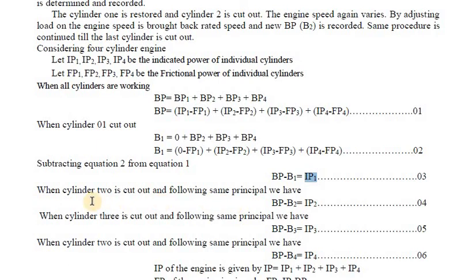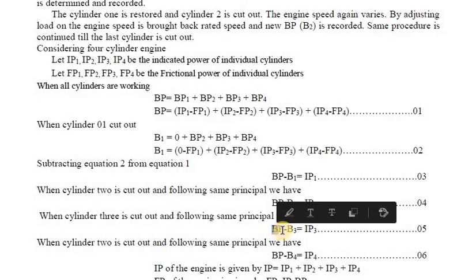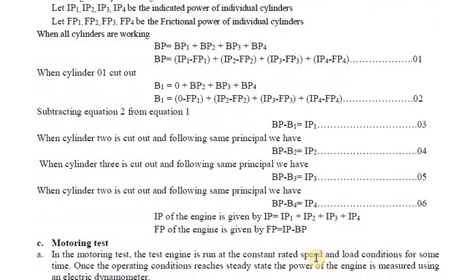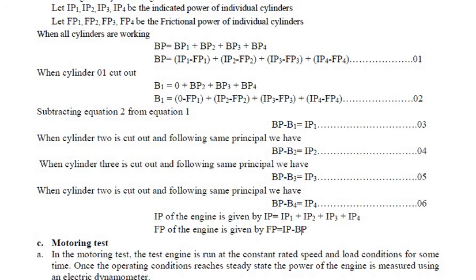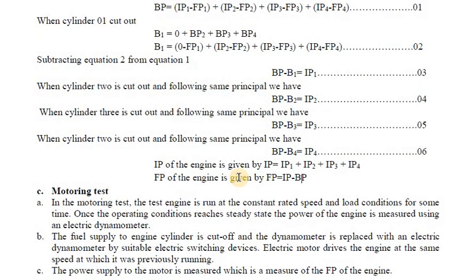Similarly: BP − BP2 = IP2, BP − BP3 = IP3, and so on for all cylinders. The total indicated power of the engine is IP = IP1 + IP2 + IP3 + IP4. The friction power of the engine is then: FP = IP − BP. This is how you find indicated power and friction power using the Morse Test — an important method for measuring these powers.